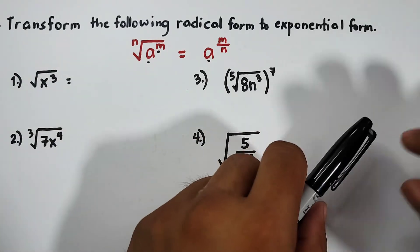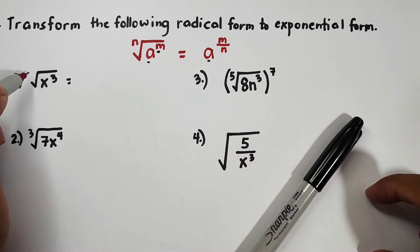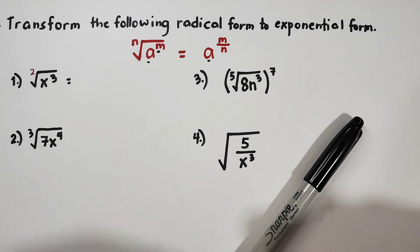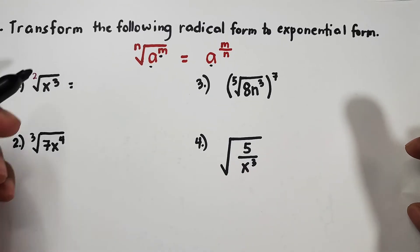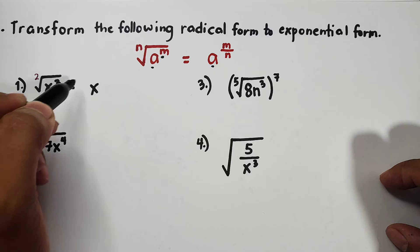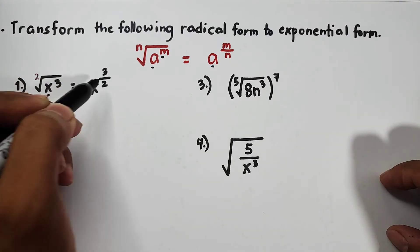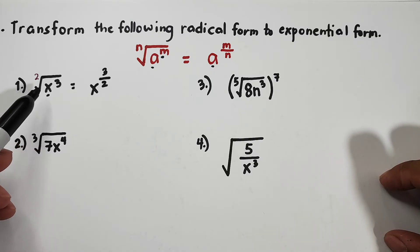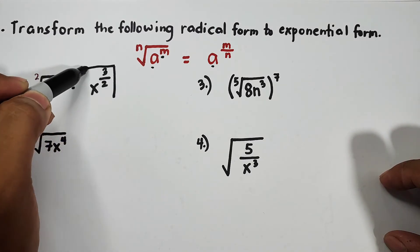There's an invisible index of 2 here, so I'll write it to make it visible. Copy your x — this exponent will become the numerator over the index, which is 2. So the equivalent exponential form of the square root of x cubed is simply x raised to 3 over 2, and that is the answer.